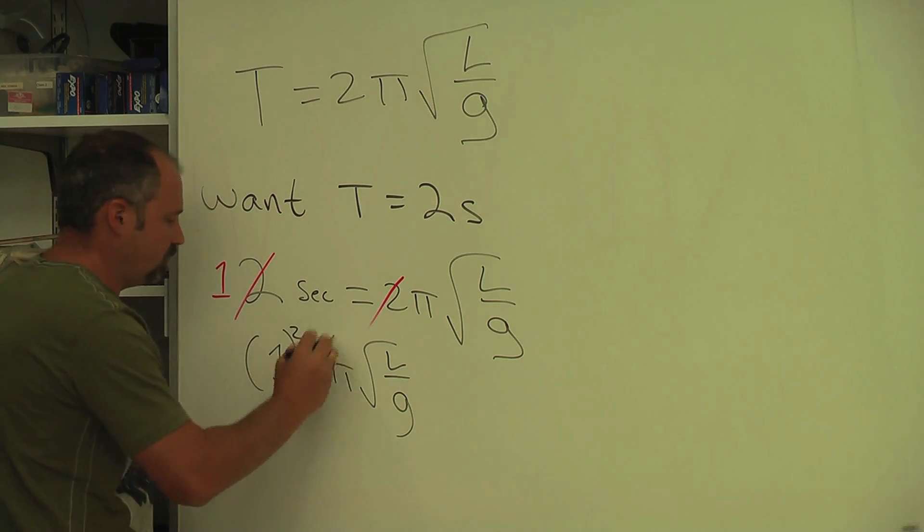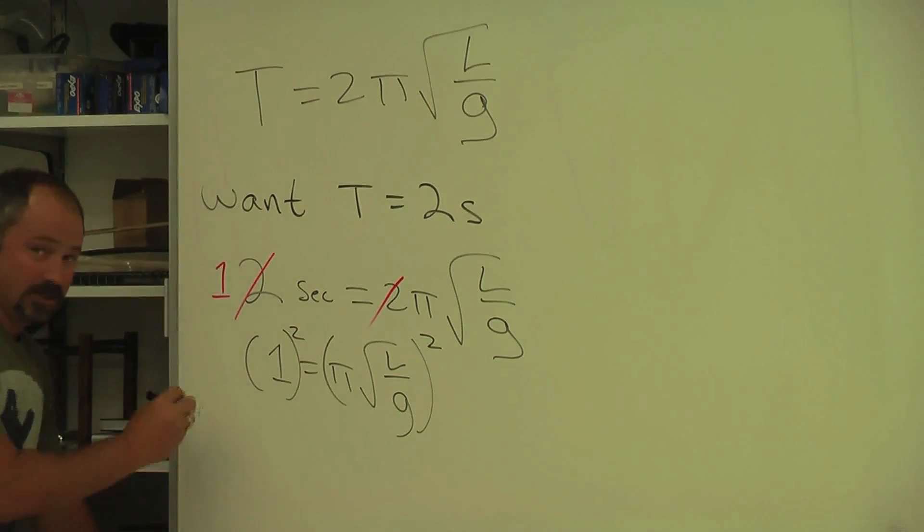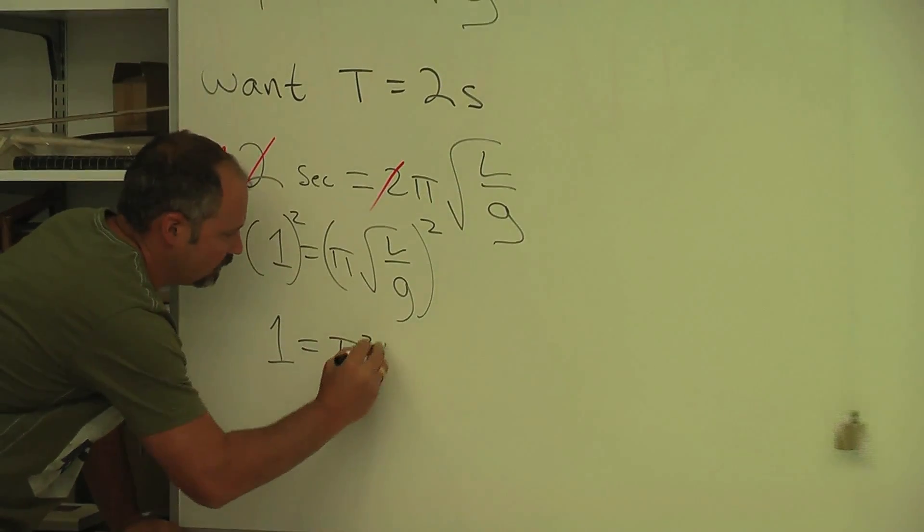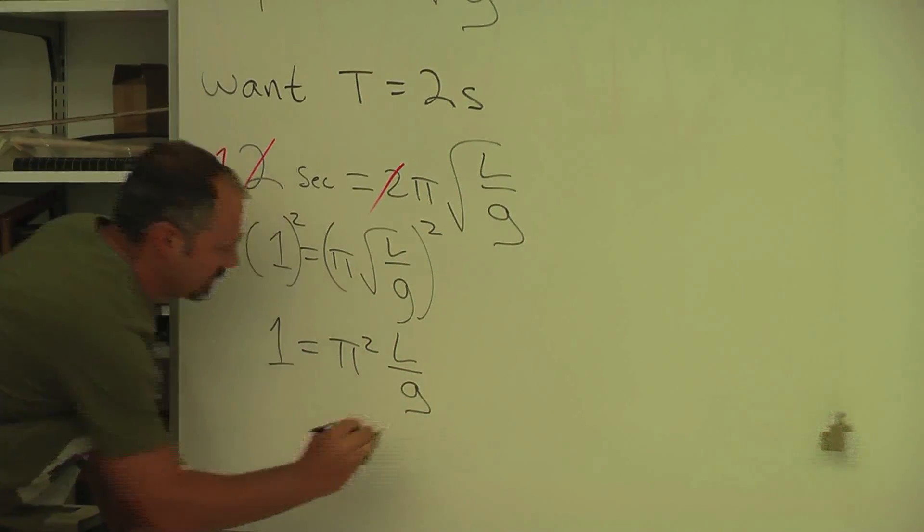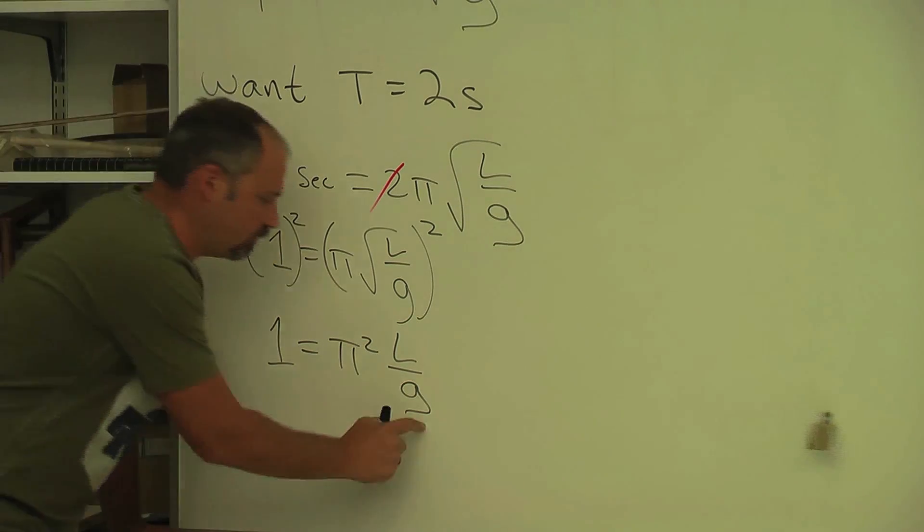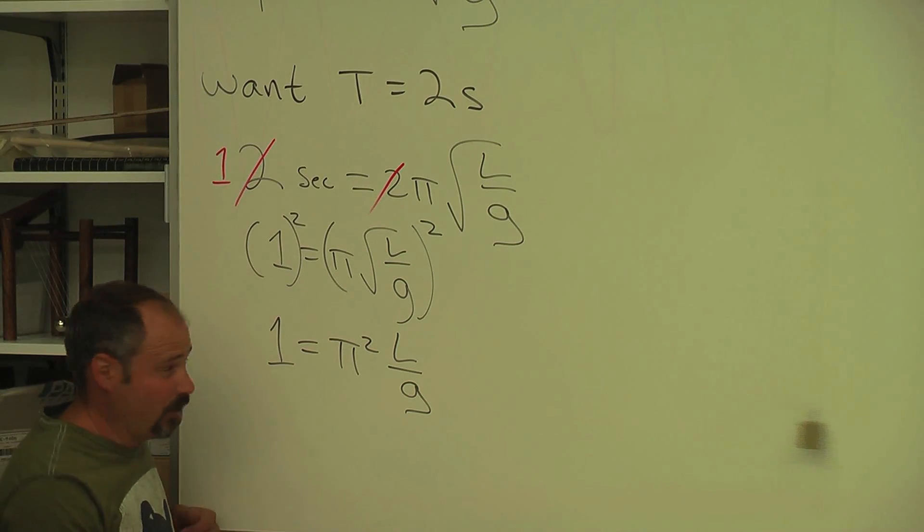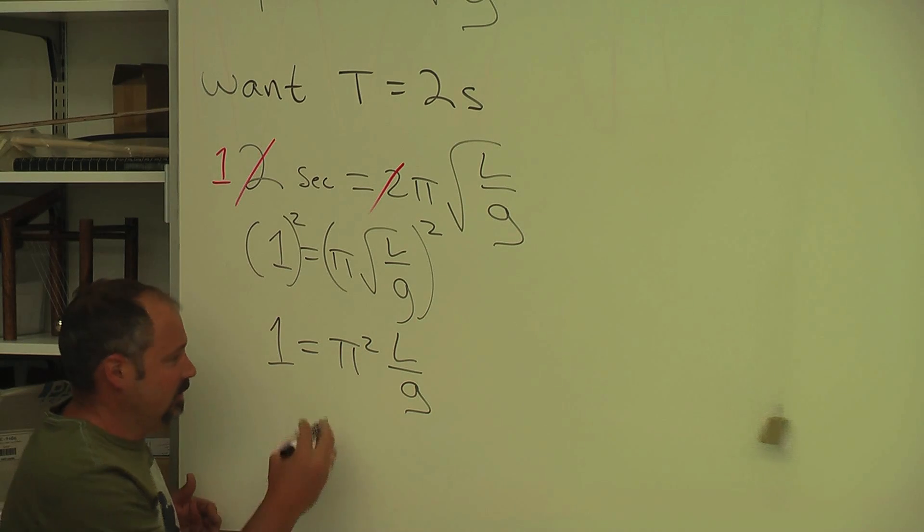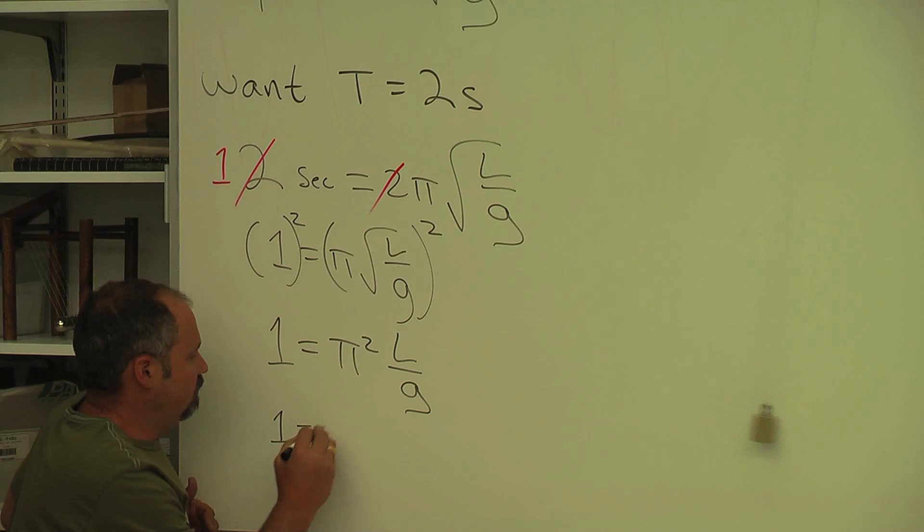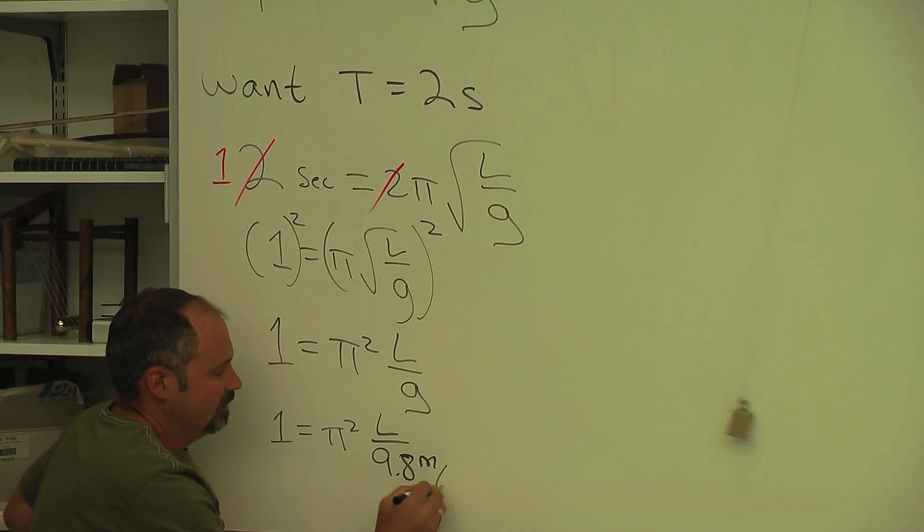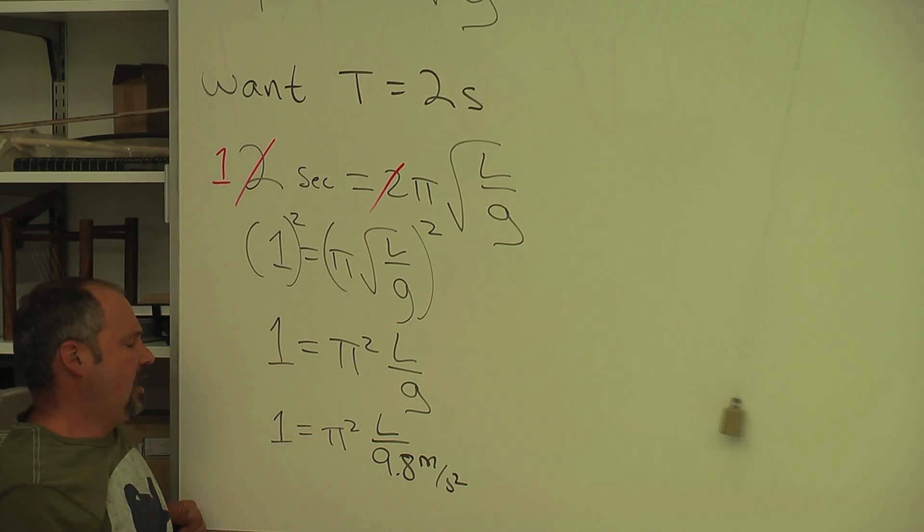I'll square both sides. And when I square both sides, well, one squared is still one. We get a pi squared here times l over g. And I know what g is. That's the acceleration of gravity. So assuming we want this clock to be run on Earth, we'll plug in 10 meters per second squared. Actually, let's use the slightly more accurate 9.8 meters per second squared.